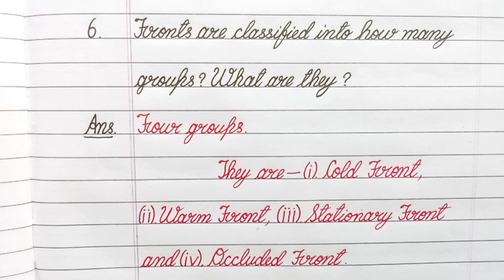Question number 6. Fronts are classified into how many groups? What are they? Answer. Four groups. They are cold front, warm front, stationary front and occluded front.